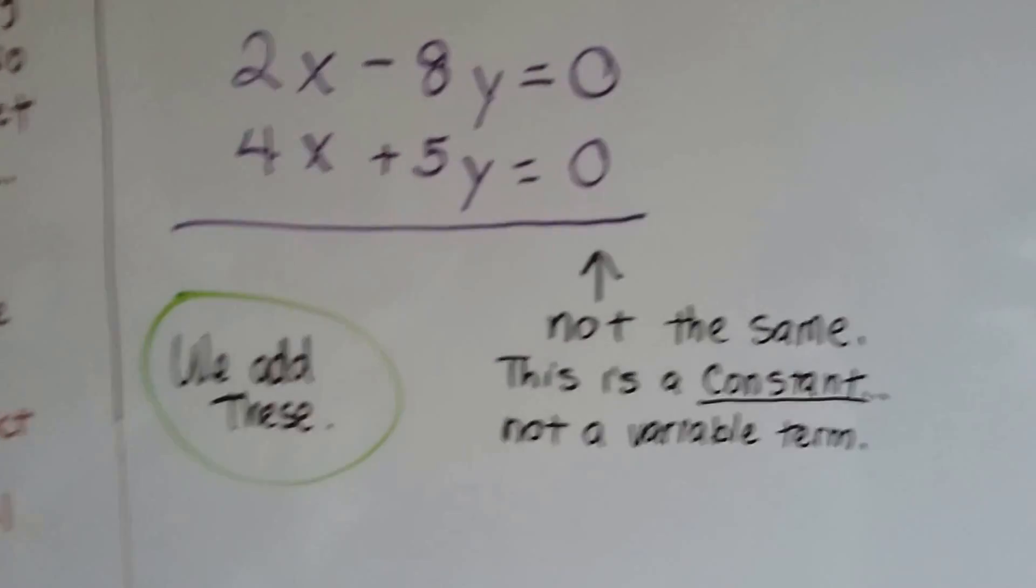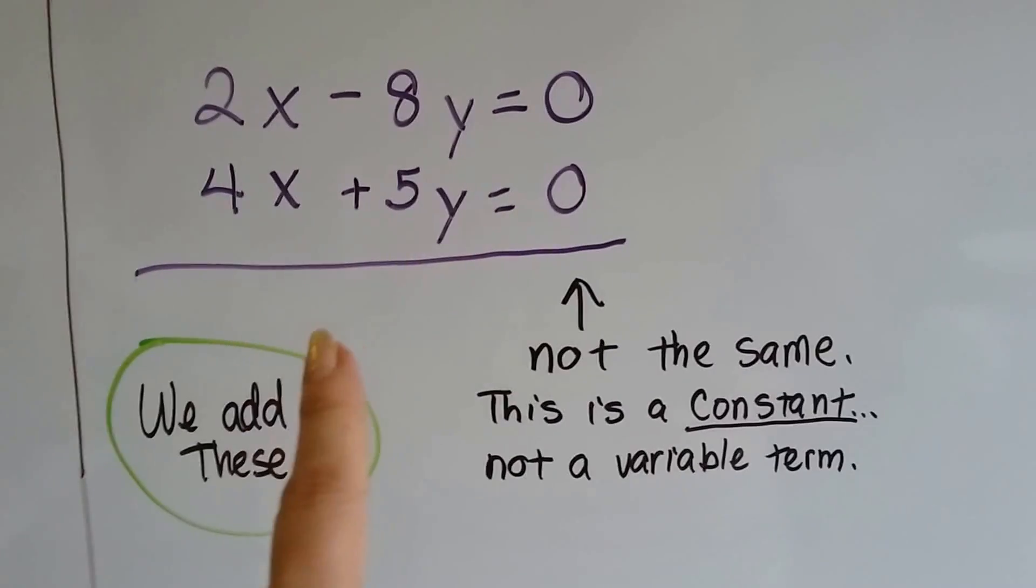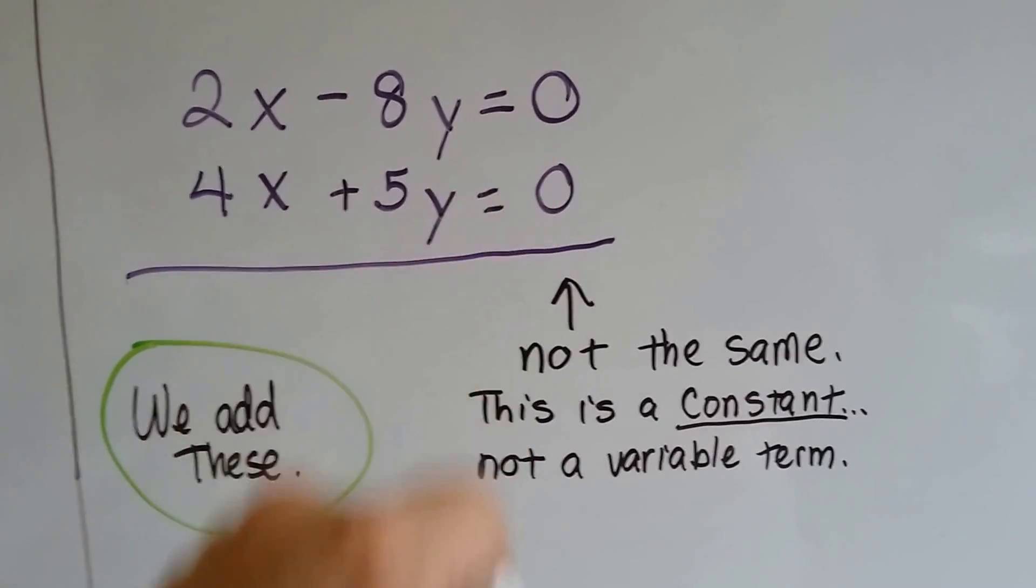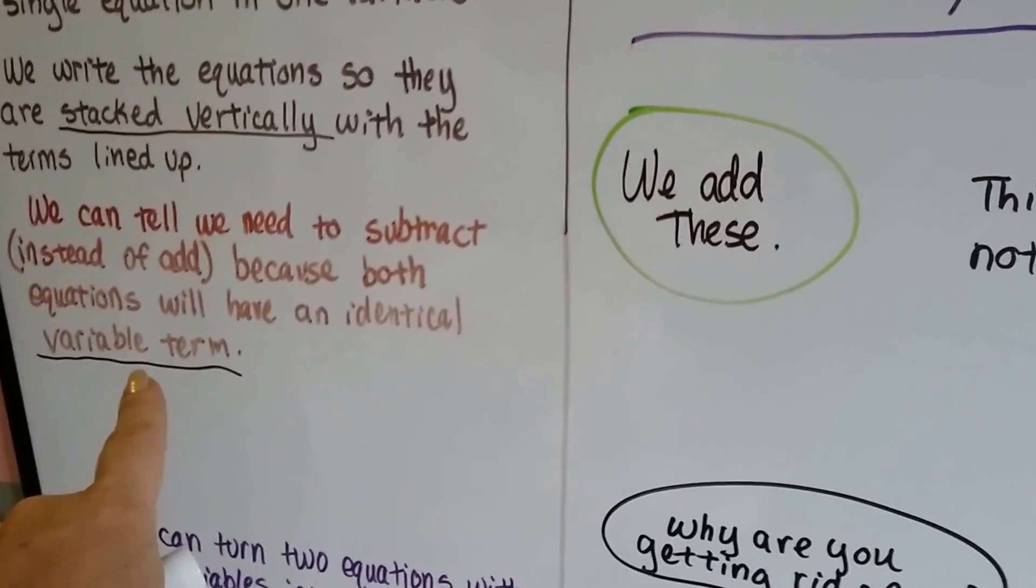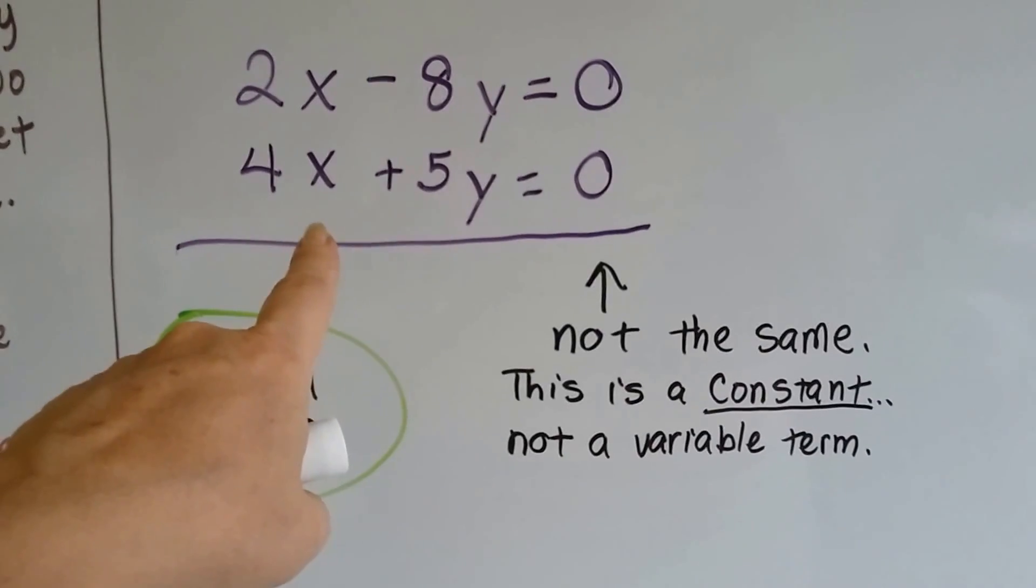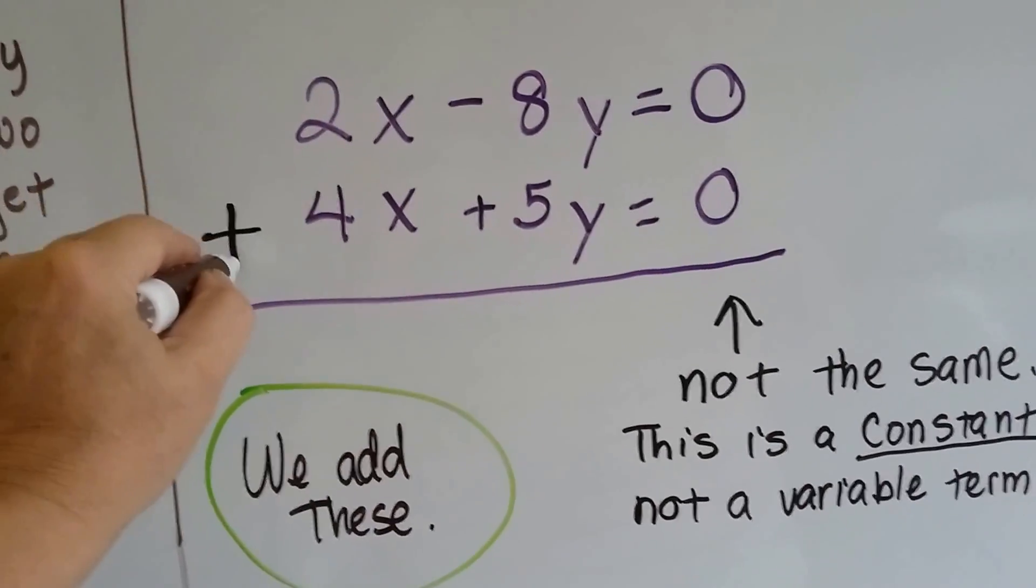Let's take a look at this one. They both have a 3 back here, but it's not the same. These are constants. That's not a variable term. The rule is it has to be identical variable term. That's not a variable term, so that's going to be addition. We're going to add these.